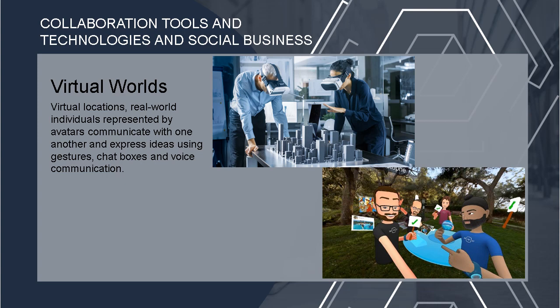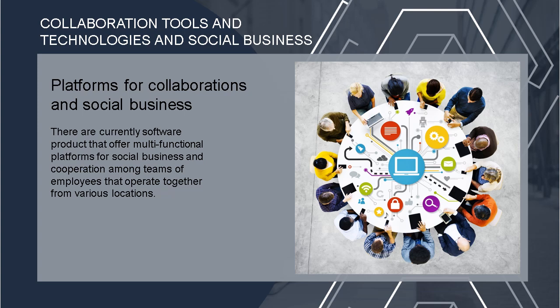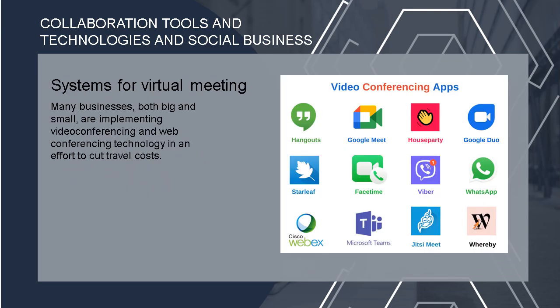Next is virtual worlds — virtual locations where real-world individuals represented by avatars communicate with one another, expressing ideas using gestures, chatboxes, and voice communication. There are also platforms for collaboration and social business — software products that offer multifunctional platforms for social business and cooperation among teams of employees operating from various locations. Video conferencing apps are examples of systems for virtual meetings. Many businesses, both big and small, are implementing video conferencing and web conferencing technology to cut travel costs. These video conferencing apps were also especially helpful during the pandemic.